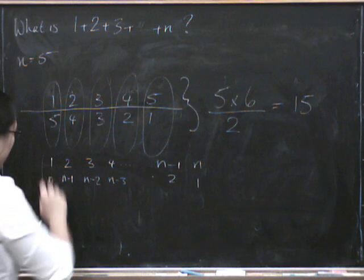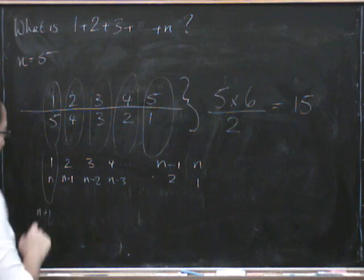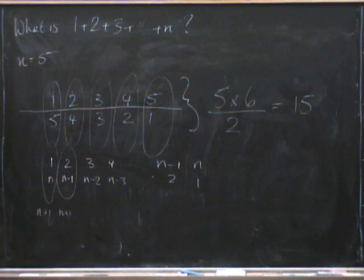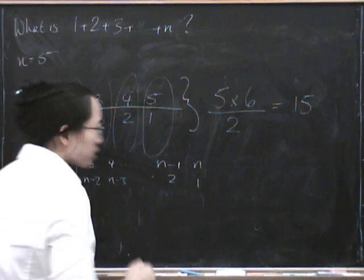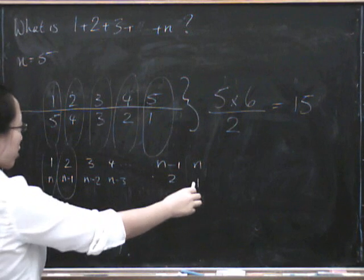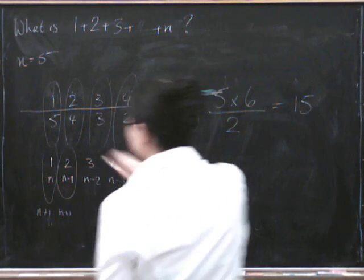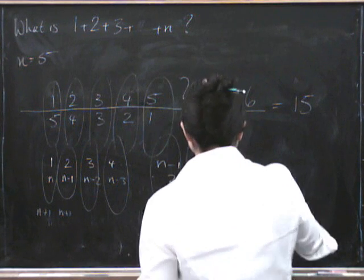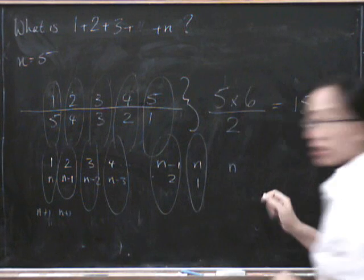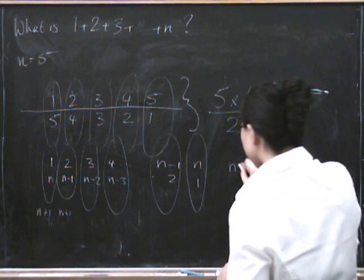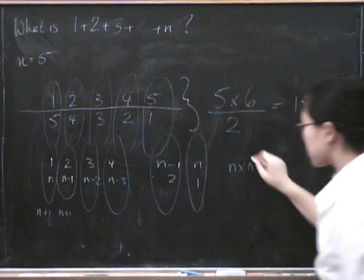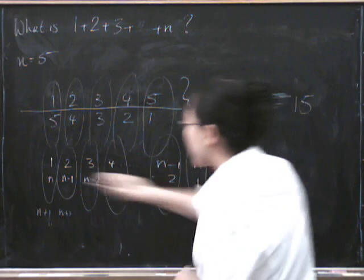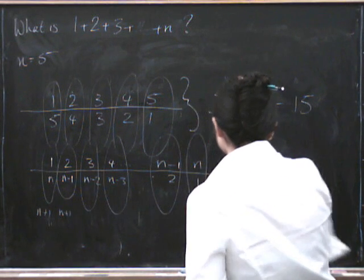Now, this pair certainly adds up to n plus 1. That pair also adds up to n plus 1. And so on. So how many pairs have we got? We've got n pairs. Each one adds up to n plus 1. And we've got to divide it by 2.